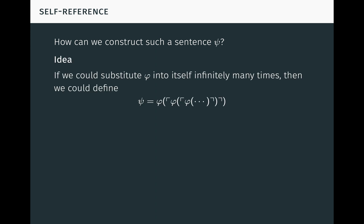Well, if we could substitute phi into itself infinitely many times, then we could define the sentence psi equal to phi of phi of phi and so on with infinitely many substitutions of phi. We would then have phi of psi equals phi of phi of phi of phi and so on, which is just psi. So certainly in this case, Peano arithmetic would prove the equivalence psi if and only if phi of psi.